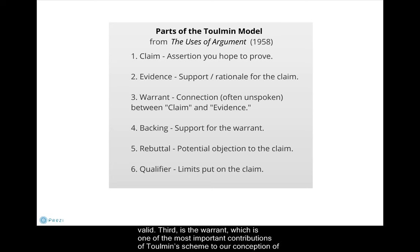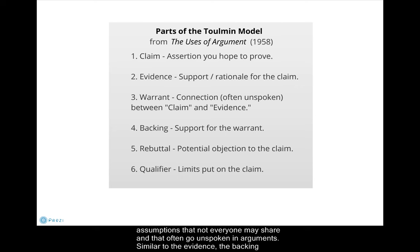Third is the warrant, which is one of the most important contributions of Tullman's scheme to our conception of argumentation. The warrant helps us draw connections between the claim and the evidence, and identifies assumptions that not everyone may share and that often go unspoken in arguments. Similar to the evidence, the backing provides support for the warrant — it tells us why our warrant is a rational assumption.